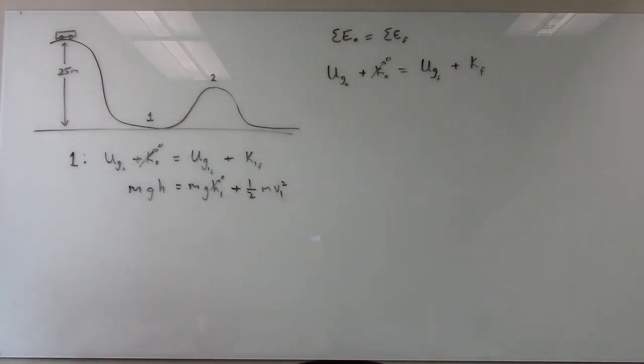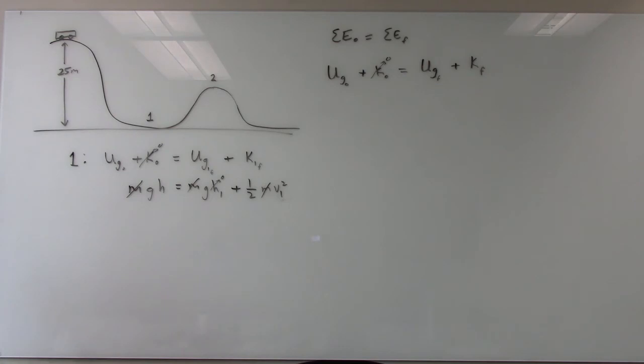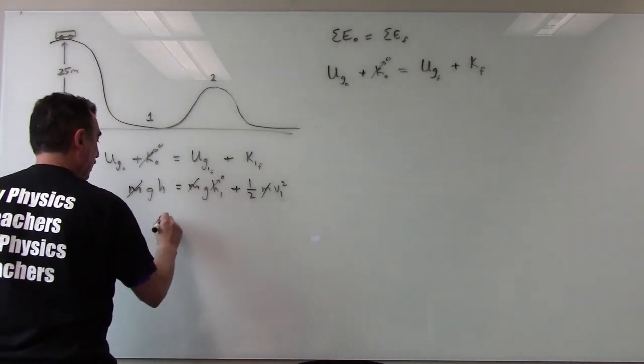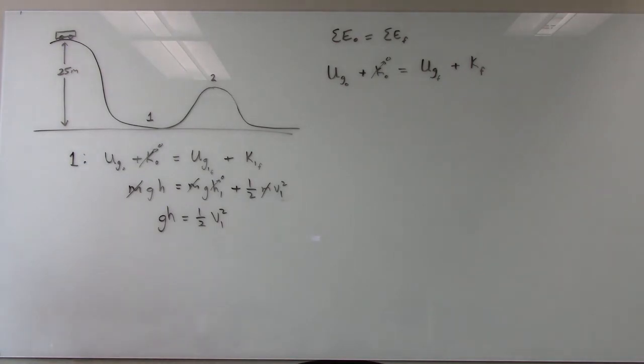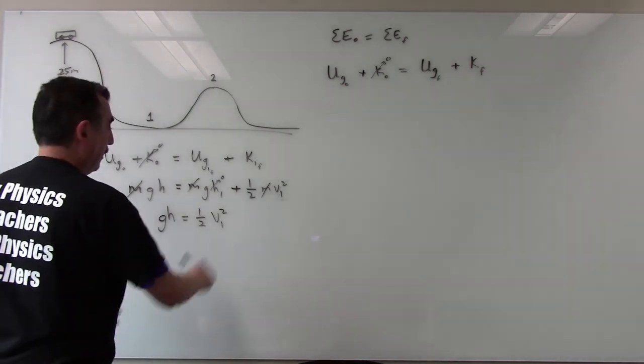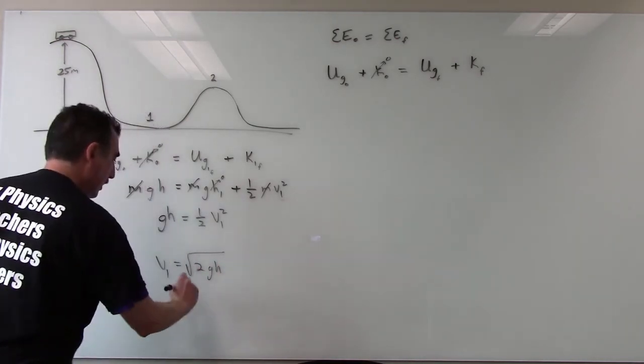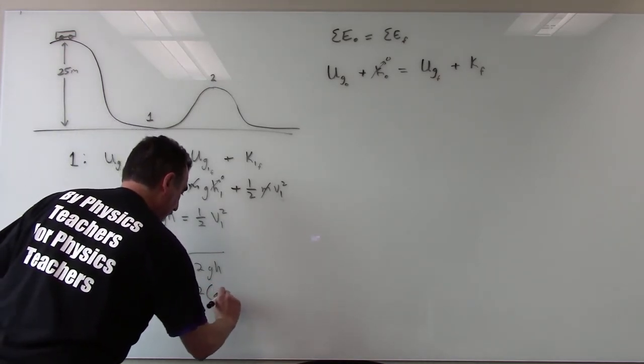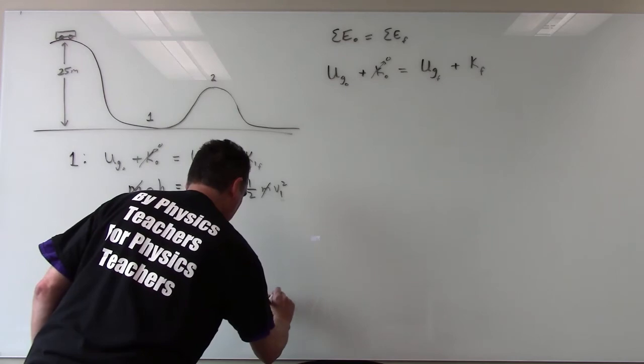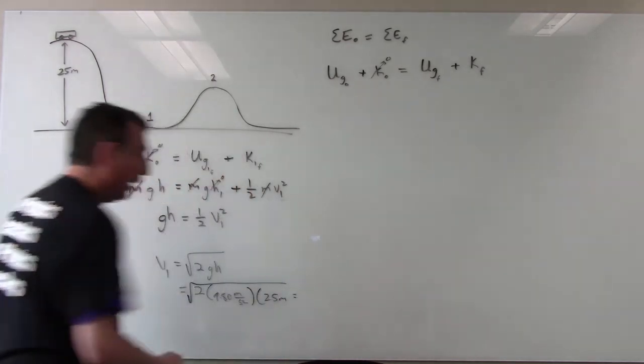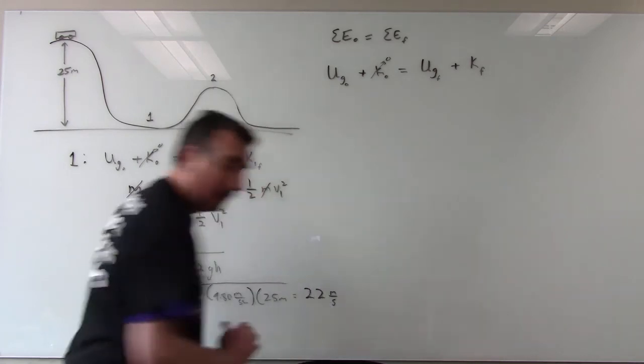What's sweet about this regardless is that mass cancels completely so this equation comes down to gravity times height equals 1 half v position 1 square. Let's solve for v at position 1 which is going to be the square root 2gh which is equal to 2 times 9.80 meters per second squared times 25 meters square root the whole thing and what we'll get is 22 meters per second at this position.